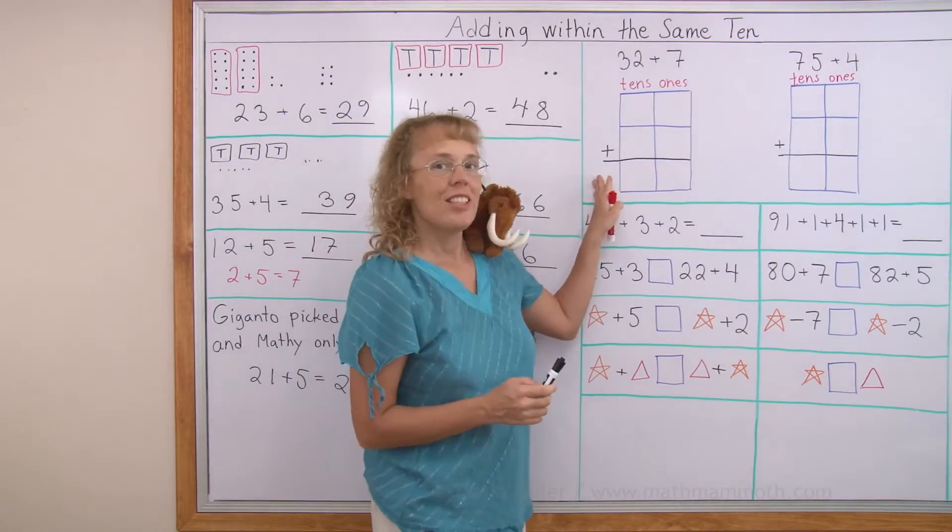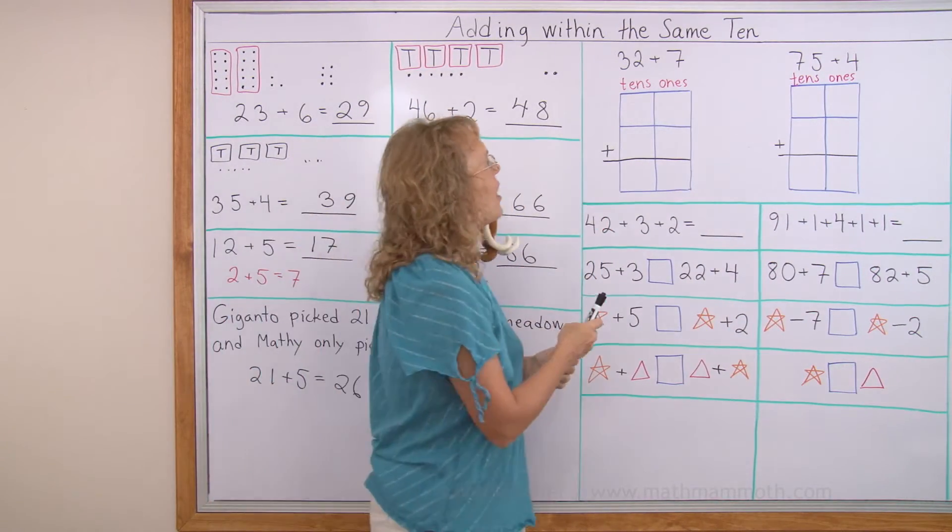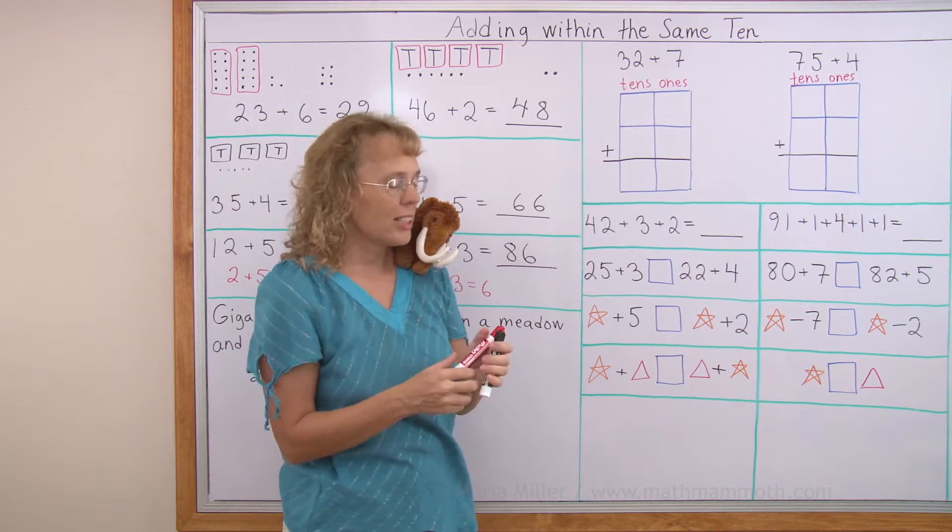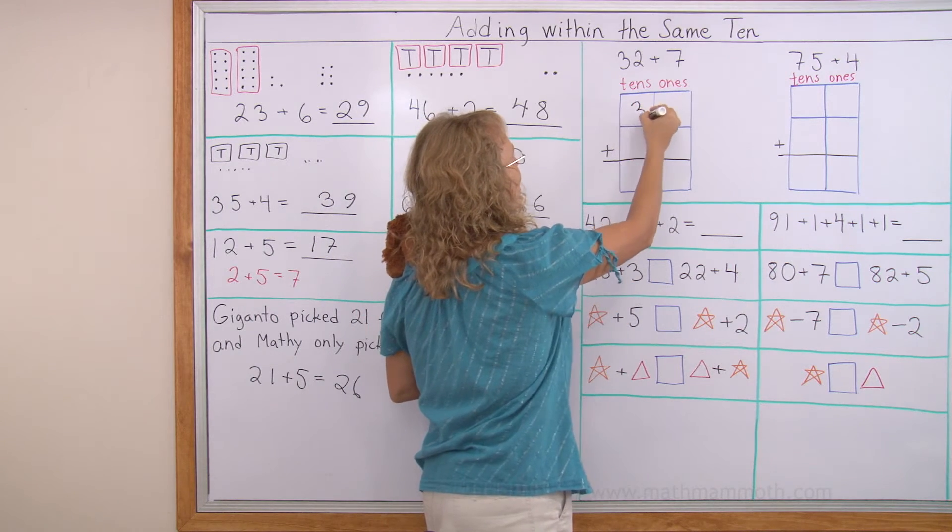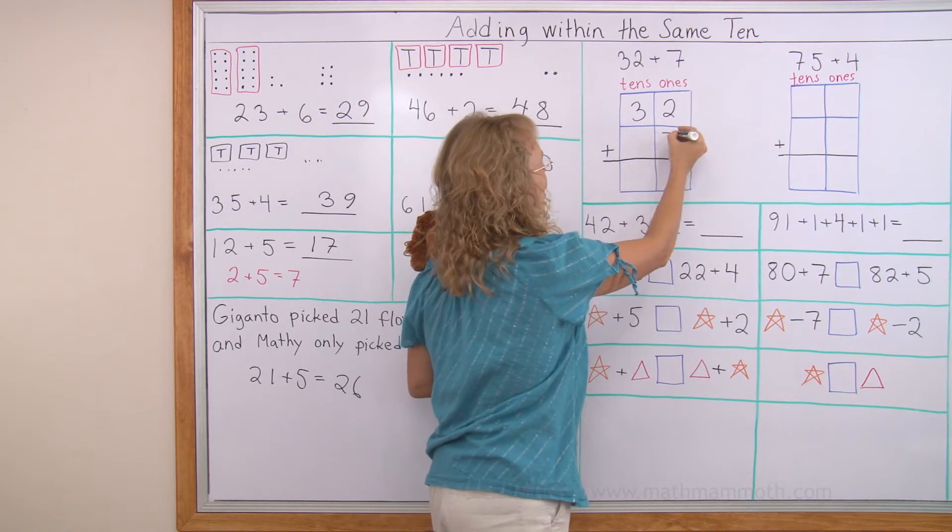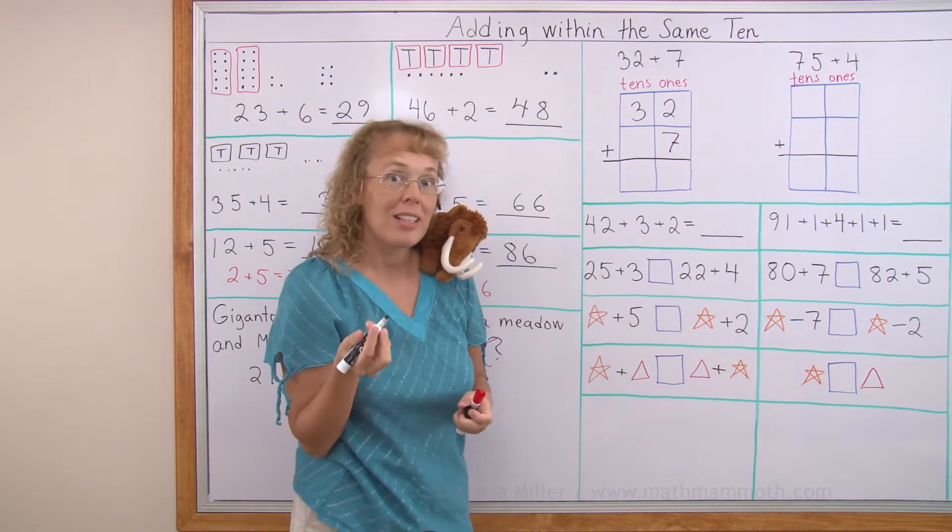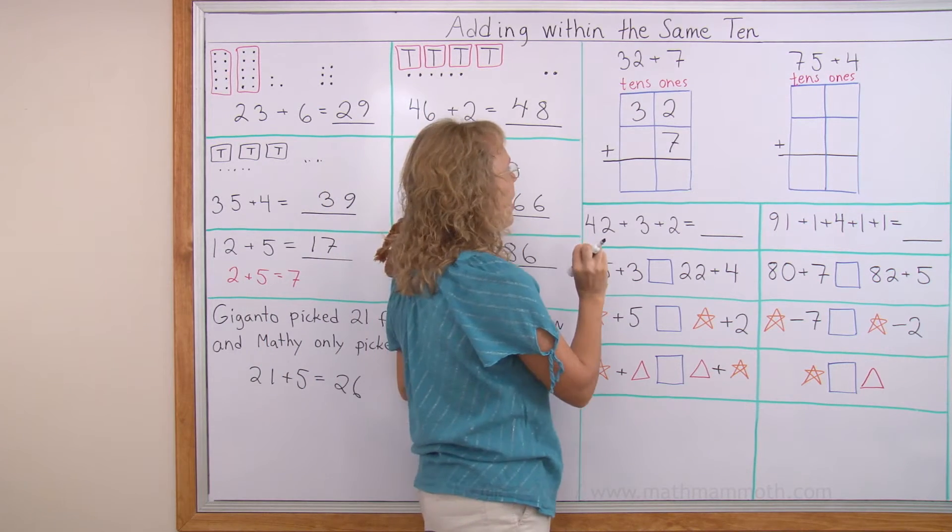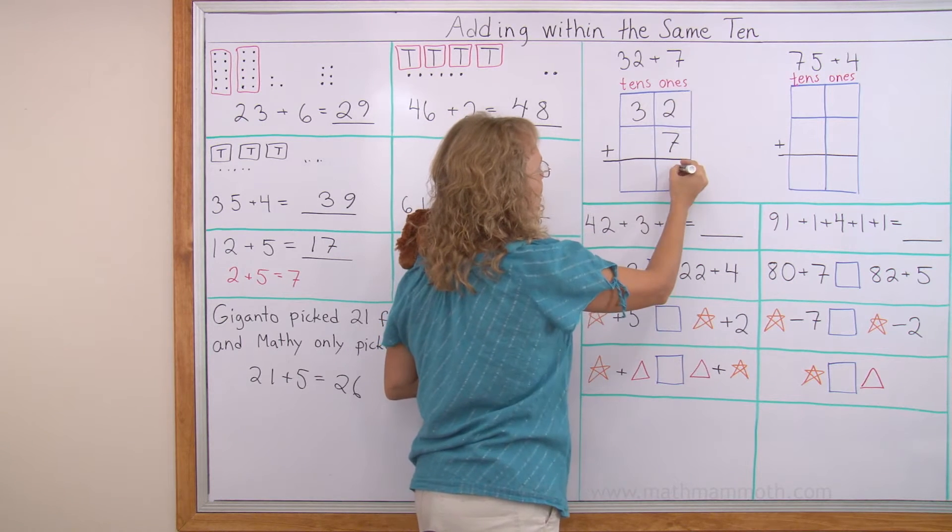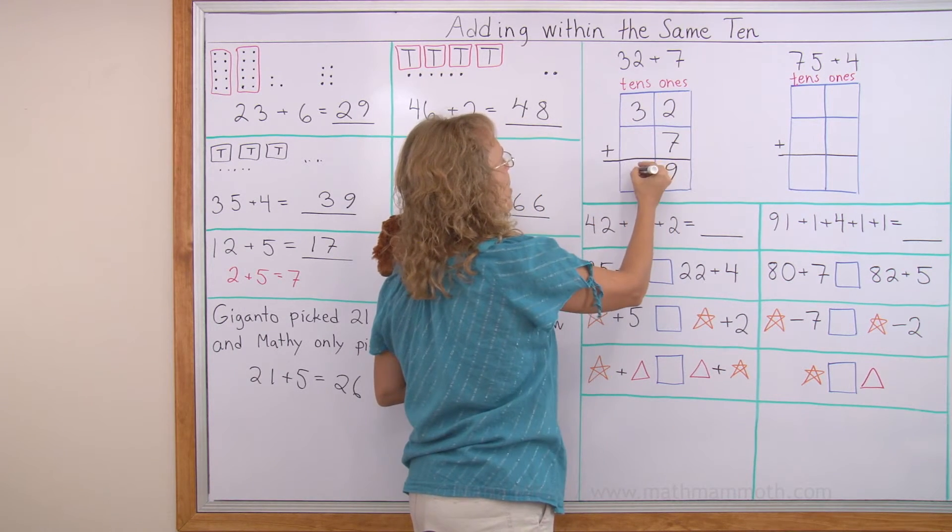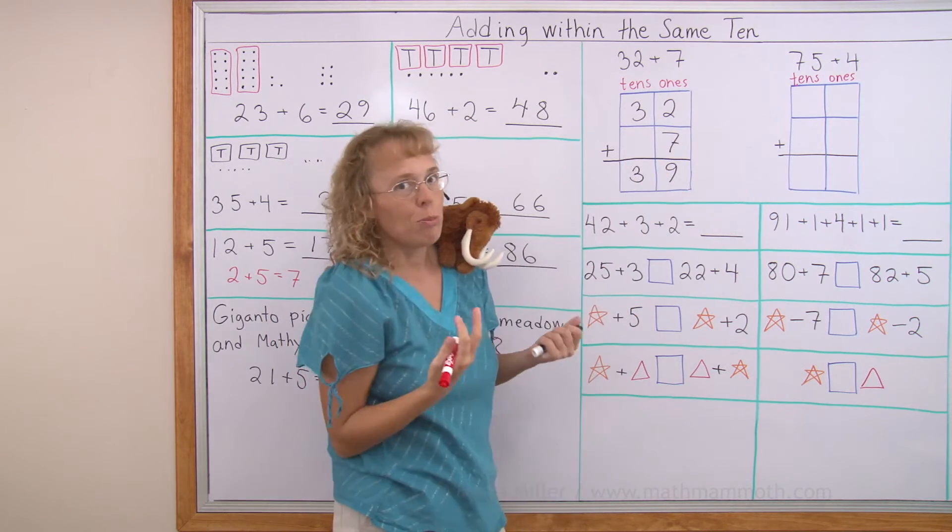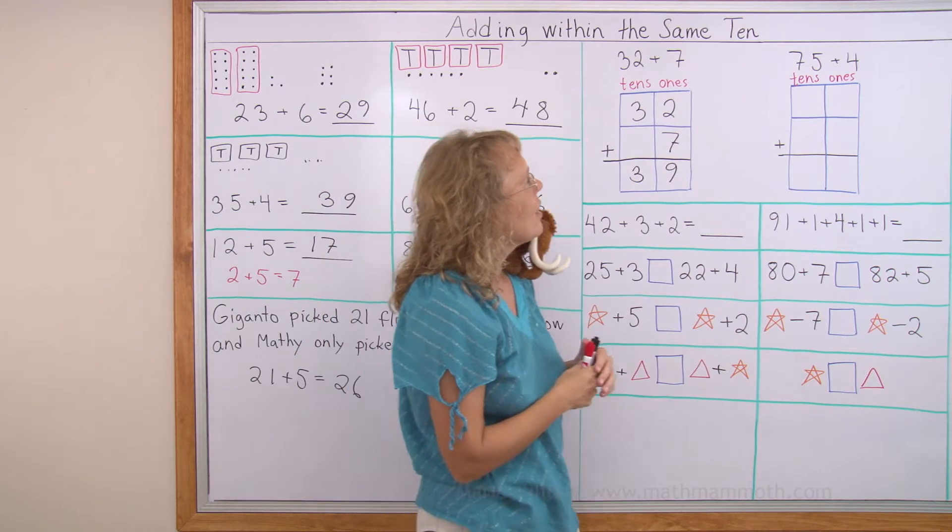Over here is another way to add or write the addition. And this time 32 plus 7. I'm going to write those numbers in these boxes under each other. So that 32 goes here. 3 tens and 2 ones. And then the 7 goes here. Because it is 7 ones. It's not 7 tens. That's why I cannot put my 7 here. Then I add 2 plus 7 here equals 9. And then 3 plus nothing is 3. If you want to, you can write a 0 here if that helps you. But it just is nothing.